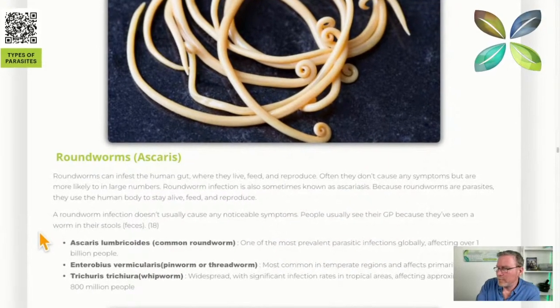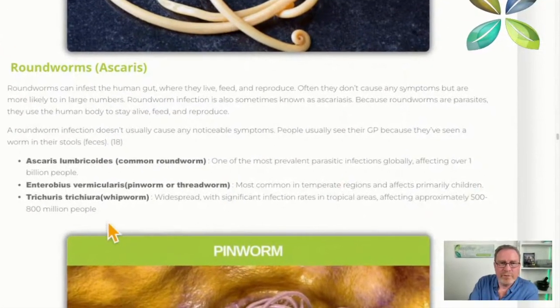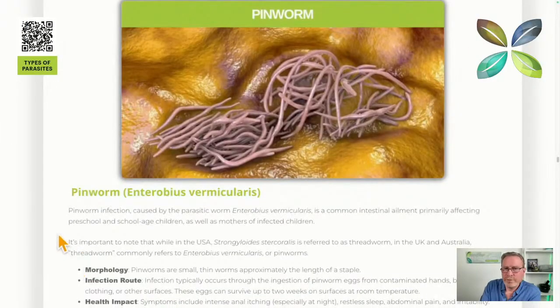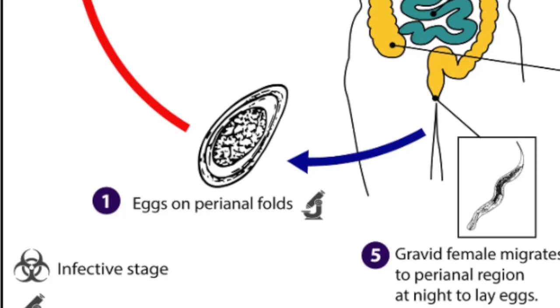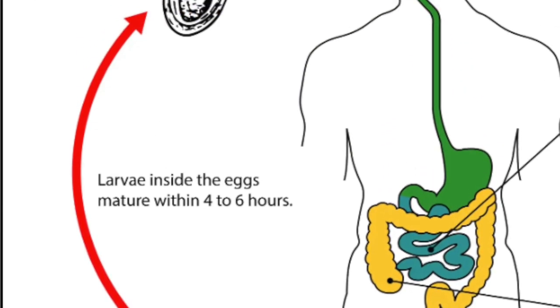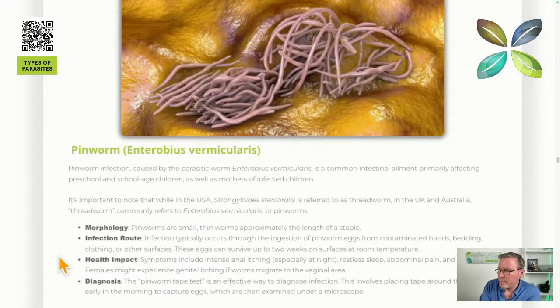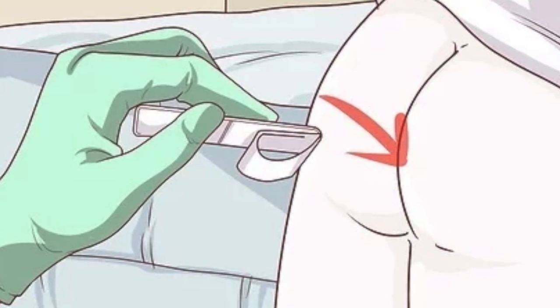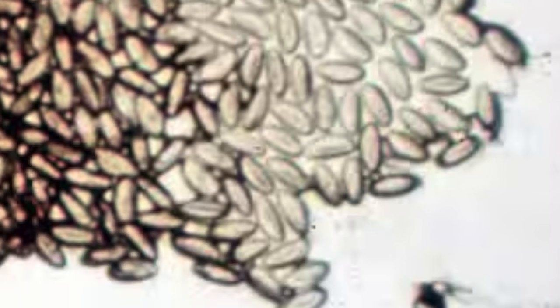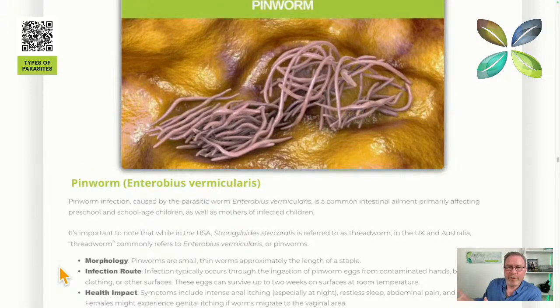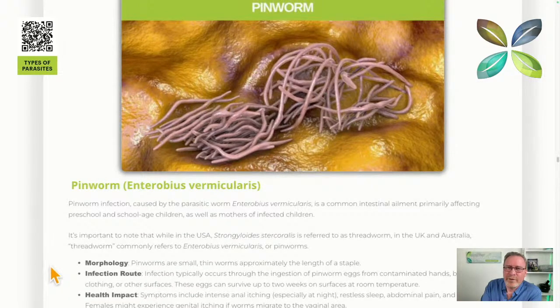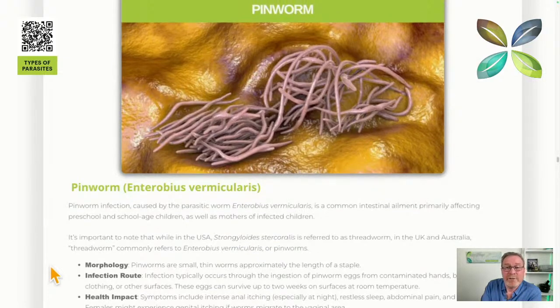500 to 800 million people are affected by whipworm alone. Pinworm is one of the roundworm types — smaller, only about an inch long, the length of a staple. It comes from contaminated hands, bedding, and clothing, and can survive up to two weeks on surfaces. Symptoms include restless sleep, abdominal pain, and irritability. The tape test involves placing tape around the anus in the morning to check for eggs — the classic sign is an itchy bottom. During a parasite cleanse, these pinworms can come out in the faeces, still alive.